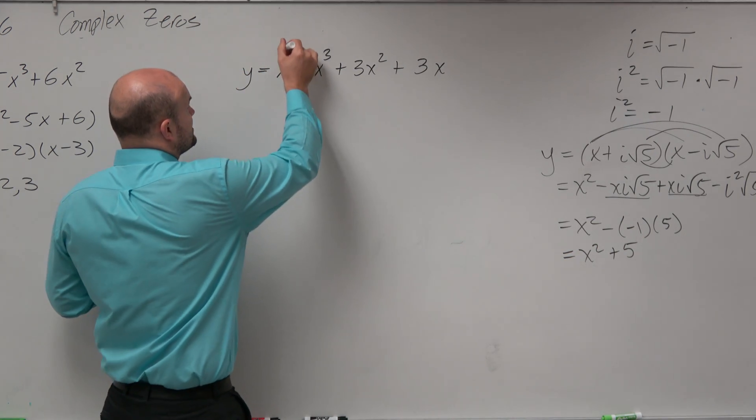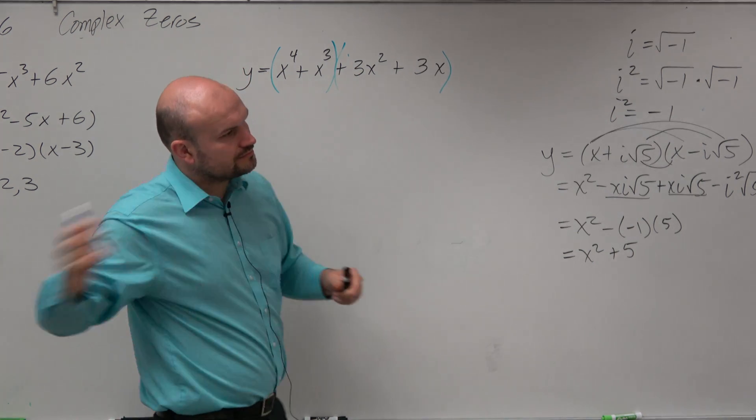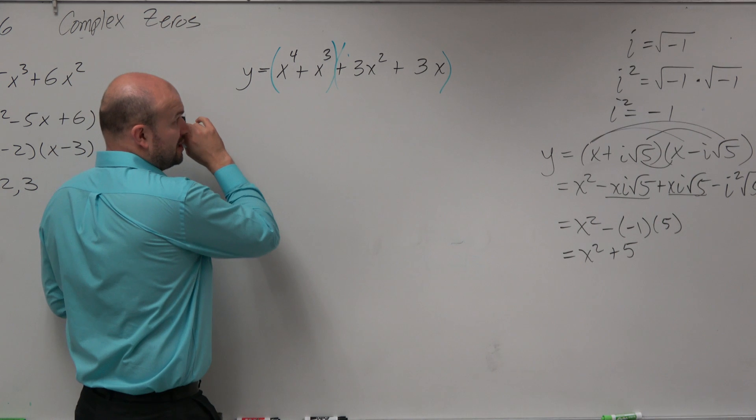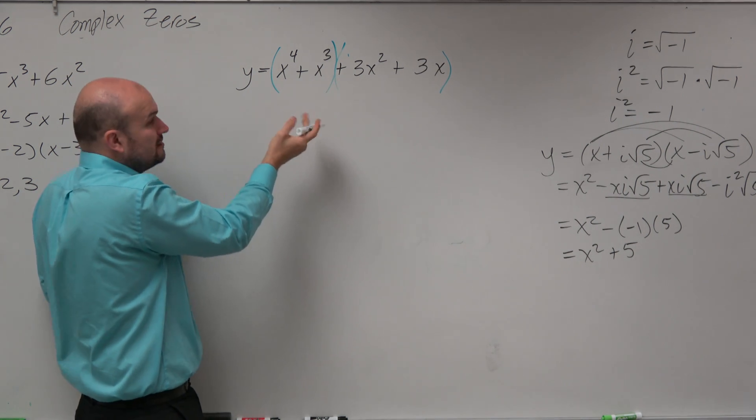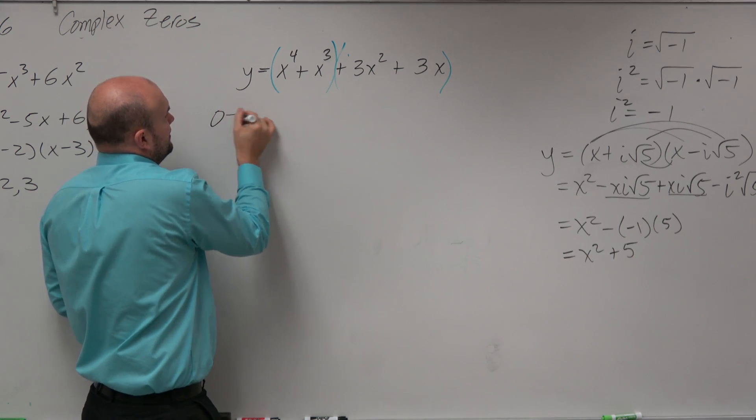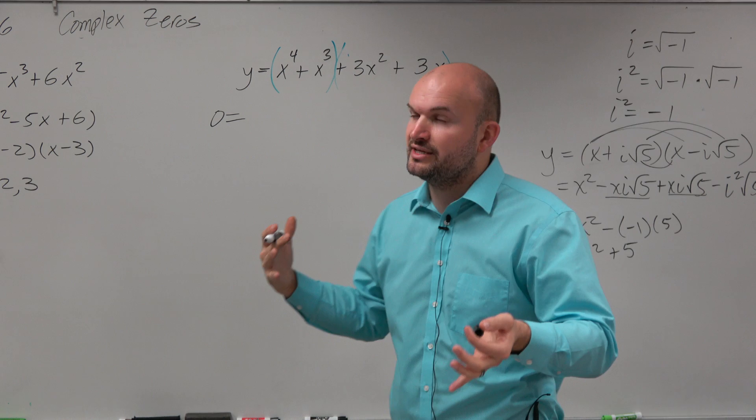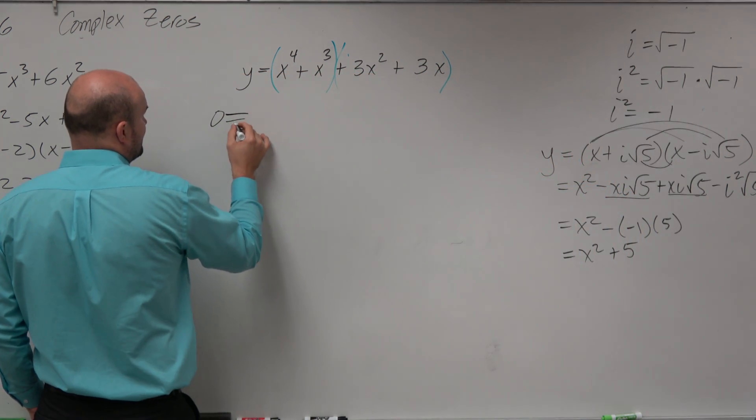But four terms, group the first two, group the last two. So now on each term, you're going to want to factor out what they have in common. We could have factored out an x first, I just kind of started getting to the grouping. You could have factored out an x first, out of everything and then redid the factoring by grouping. But if you didn't, it's not the end of the world. It's going to come back anyways for us.